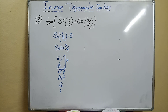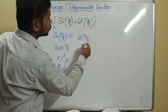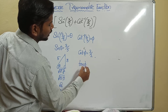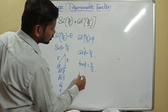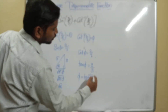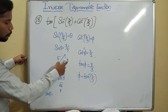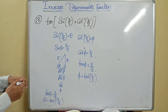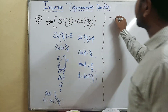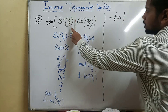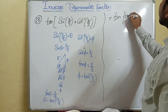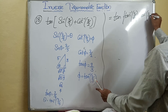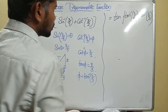For cot inverse of 3/2: let cot π = 3/2. Then tan π = 2/3, so π = tan inverse of 2/3. Now substituting back: tan of (tan inverse of 3/4 + tan inverse of 2/3). Using the formula tan inverse of x plus tan inverse of y = tan inverse of (x+y)/(1−xy), with x = 3/4 and y = 2/3.